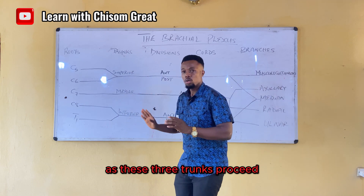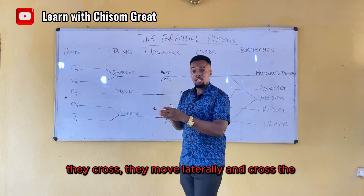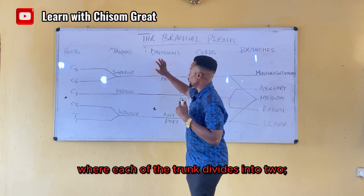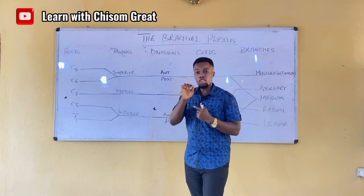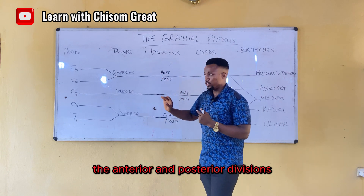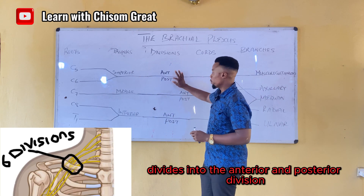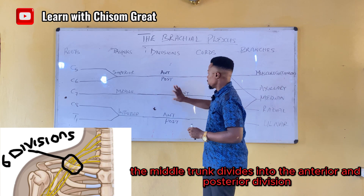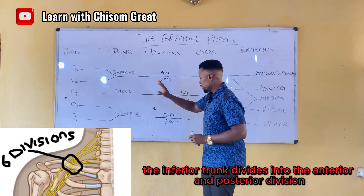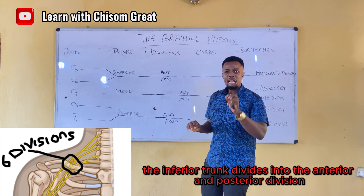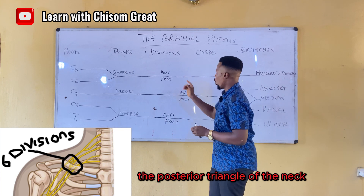As these three trunks proceed, they cross the mid-clavicular region and cross the posterior triangle of the neck, where each of the trunks divides into two — an anterior and a posterior division. So the superior trunk, the middle trunk, and the inferior trunk each divide into anterior and posterior divisions, immediately after crossing the posterior triangle of the neck.